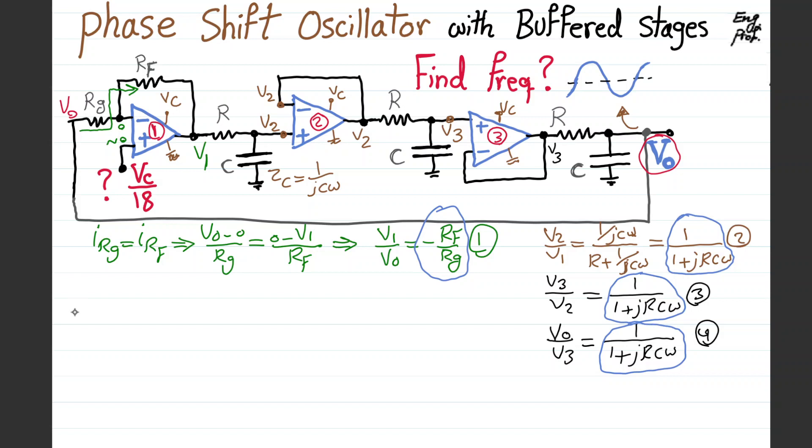The loop gain is the product of negative Rf over Rg times one over one plus jRC omega to the power three. Using equations 1, 2, 3, and 4, the loop gain equals negative Rf over Rg times one over one plus jRC omega to the power three. We're talking about frequency of oscillation at a specific frequency where oscillation is stable and happening. This is the whole loop gain.